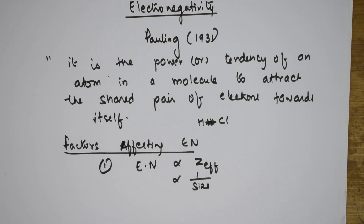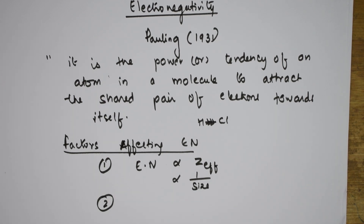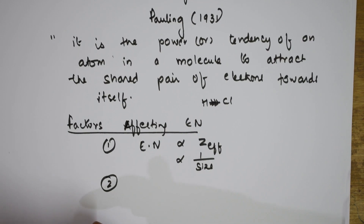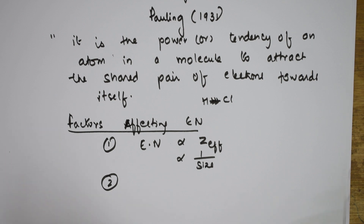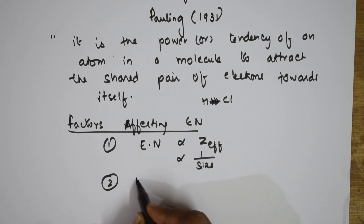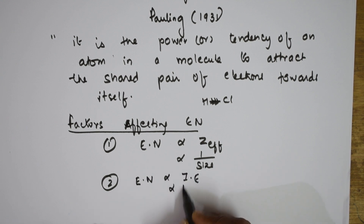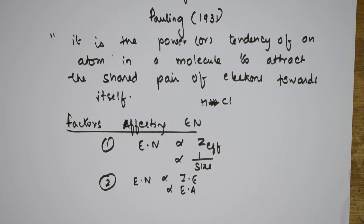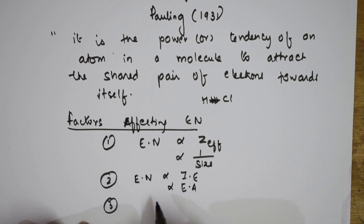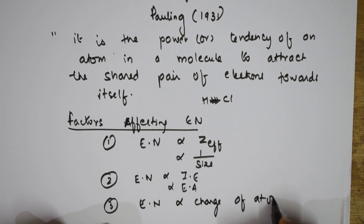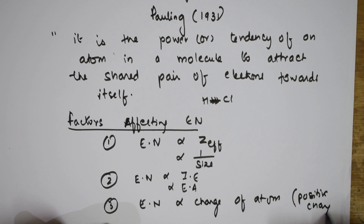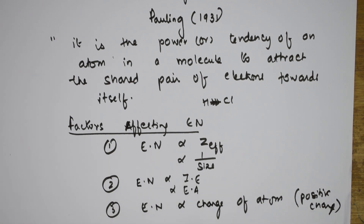The complete explanation for this concept is done in the inorganic trick series — please watch that video for the full explanation. Next, electronegativity is also directly related to ionization enthalpy and directly related to electron affinity. Last but not the least, electronegativity is directly related to the charge of the atom — particularly a positive charge increases electronegativity.